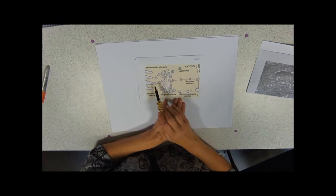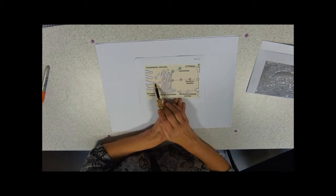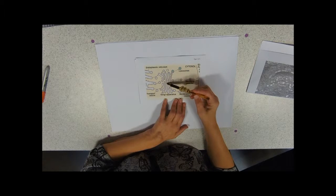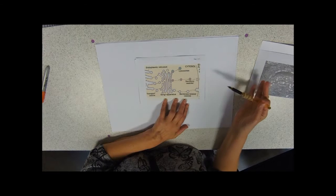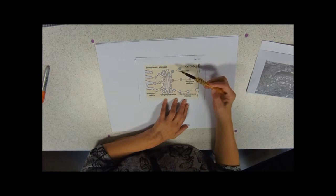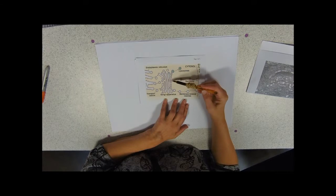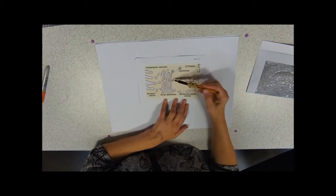You'd have the primary structure coming in here, it being folded up into its globular 3D shape, perhaps having some groups removed or added, a few amino acids removed or added, modified in some way.